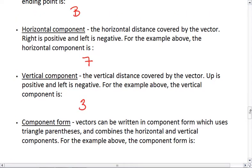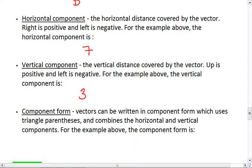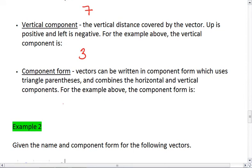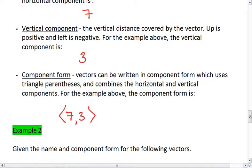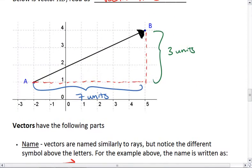Together, the horizontal and the vertical component make up your component form. Vectors can be written in component form, which uses the triangle parentheses, or at least that's what I call them - they're angled parentheses, and combines the horizontal and the vertical components. So we write the horizontal first, and then the vertical. And this is the component form for vector AB. So vector AB tells us we go seven units to the right and three units up.